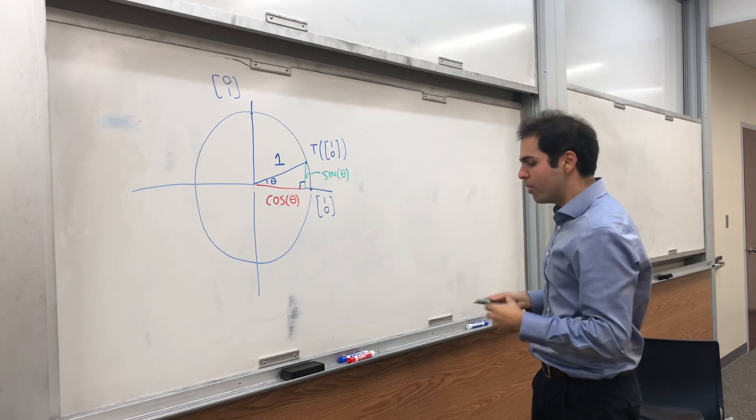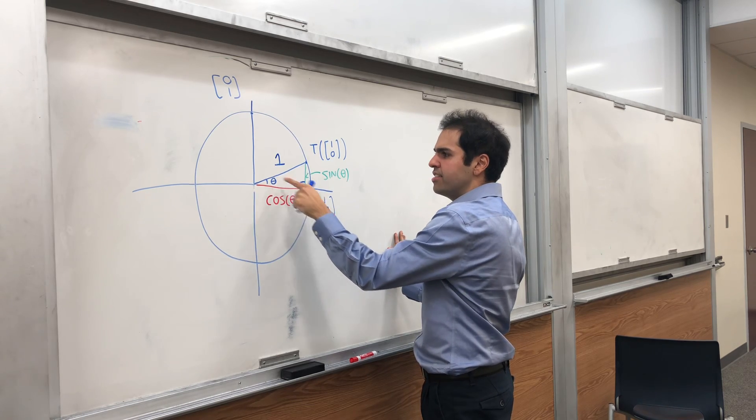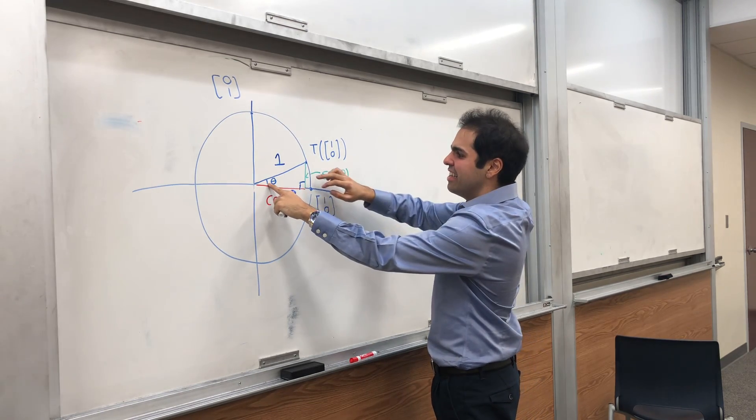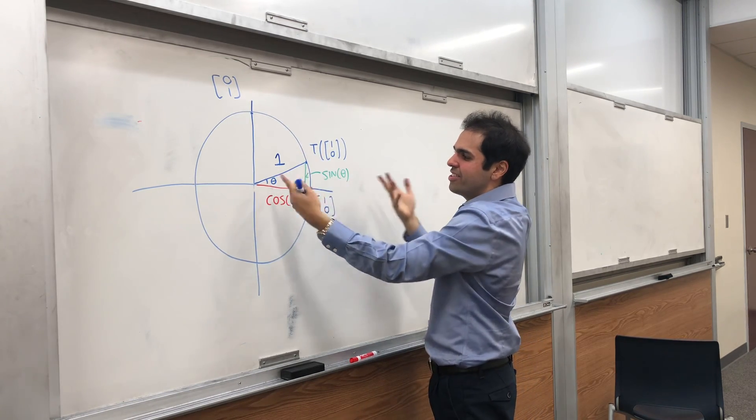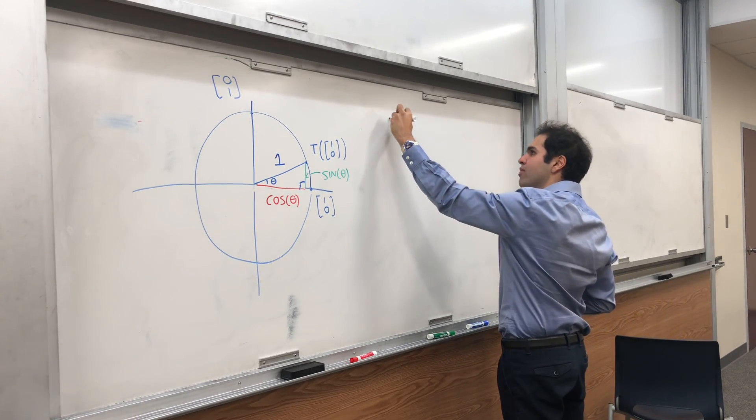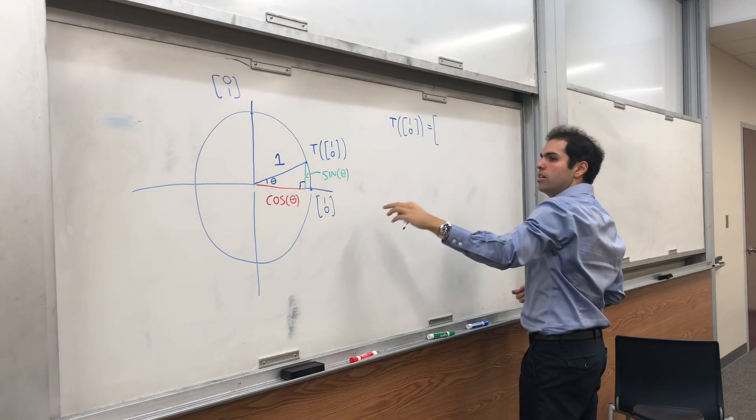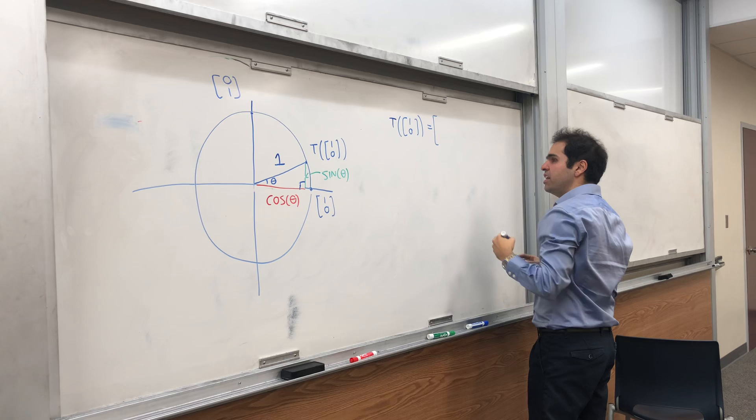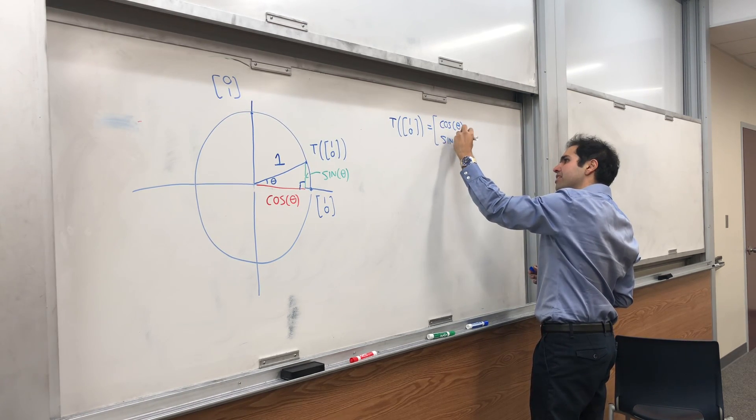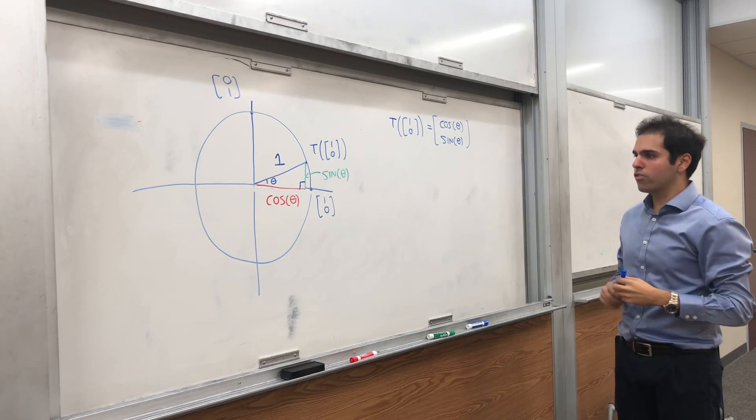And again, if you want the derivation, it's simply cosine theta is this over 1, which just becomes cosine theta. And sine theta is this over 1, so this is just sine theta. So in particular, T of (1,0) is just the x-coordinate and y-coordinate, so cosine theta and sine theta. And this gives us the first column of our matrix.